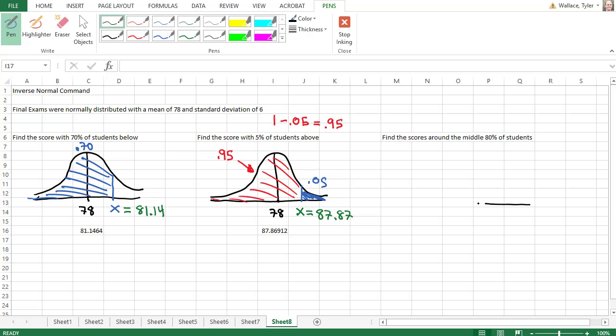What if we want the middle 80% of students? We still know that 78 is the mean score, but we want the range of scores for students that scored around that middle 80%. We want to know what are those two values, I'll call them X1 and X2, where 80% of students are between them.